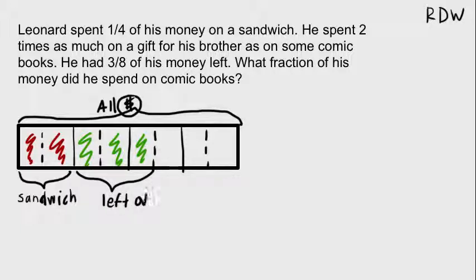So three-eighths, let's color code it. Here is what he has left. Here is what he spent on the sandwich. And this is my leftover. Now we have this right here. So it says he spent two times as much on a gift for his brother as on some comic books. So two times, this is what we have to work with right here, these three-eighths. We need two times as much. Well, if we have three pieces, two times as much would be that he maybe spent one-eighth on a comic book and two on his brother.